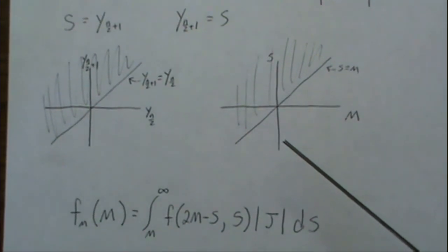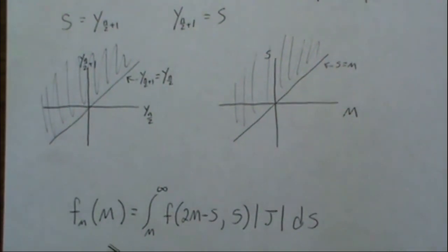So to integrate out S, we're going to go from M to infinity. So here is the joint, or not the joint, the density of M, which is we're going to integrate out S, which from M to infinity, and here's the joint density.